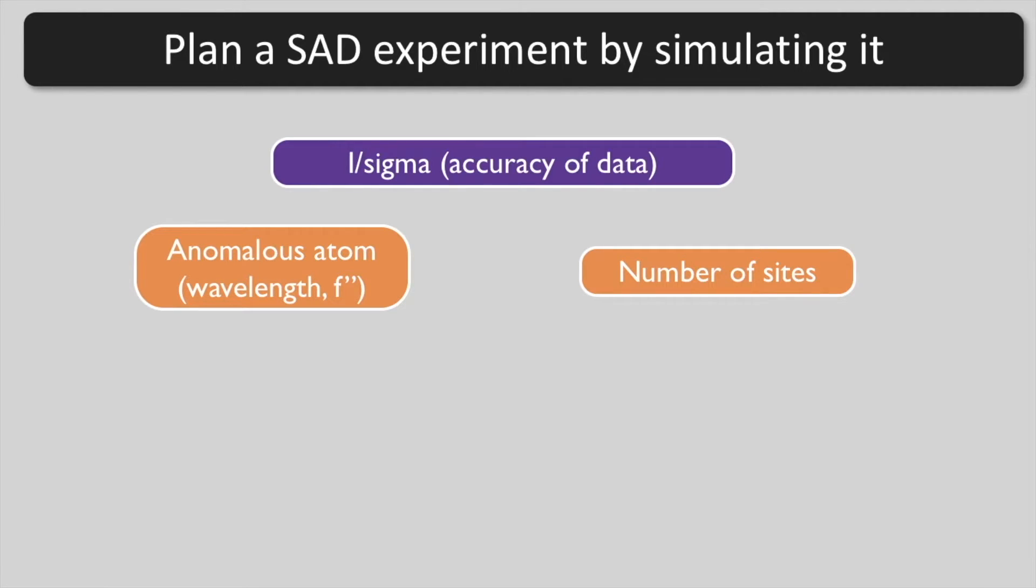It will depend on the number of sites and the resolution. It will depend indirectly on the sequence of your macromolecule, particularly at wavelengths longer than about 1.7 angstroms, because oxygen and other atoms in your structure will contribute to the anomalous scattering in a way that amounts to noise.